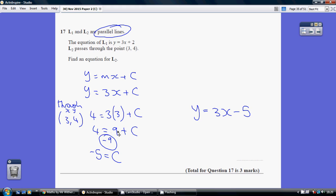3 times 3 is 9. 4 equals 9 plus c. Taking away 9 from both sides, we can see that c must be minus 5. So, this is the equation, but instead of c being an unknown, we know it's minus 5. So, our final answer is y equals 3x minus 5.